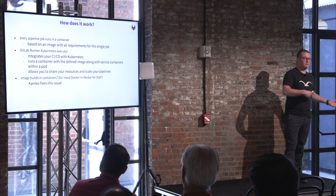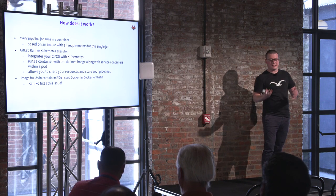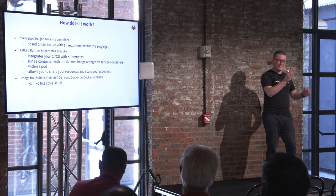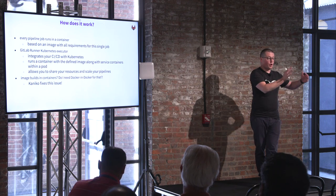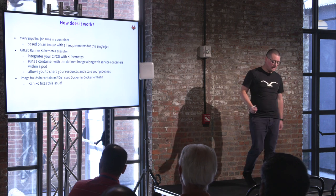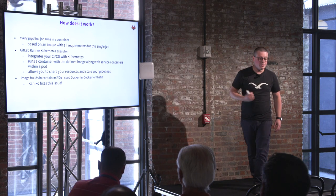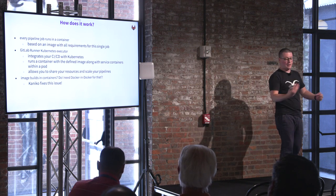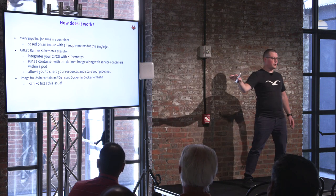You have a container and would like to run it — how can you do it? Since we're working in the Kubernetes world, the best way is to use the GitLab runner Kubernetes executor, which integrates your CI/CD with your Kubernetes cluster. Every job will be scheduled as a pod on your Kubernetes cluster, and within the pod your build container as well as service containers will be started. Your whole pipeline workload is completely moved into your Kubernetes cluster and can be shared with other workloads, applications, and other pipelines.